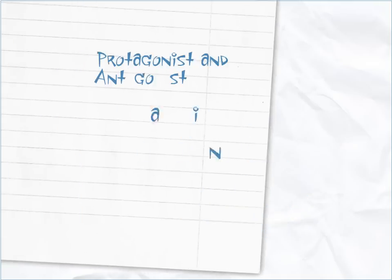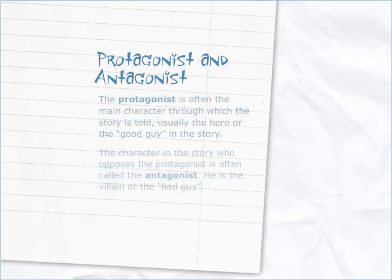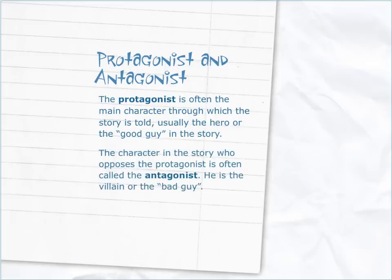Protagonist and antagonist. The protagonist is often the main character through which the story is told, usually the hero or the good guy in the story. The character in the story who opposes the protagonist is often called the antagonist. He is the villain or the bad guy.